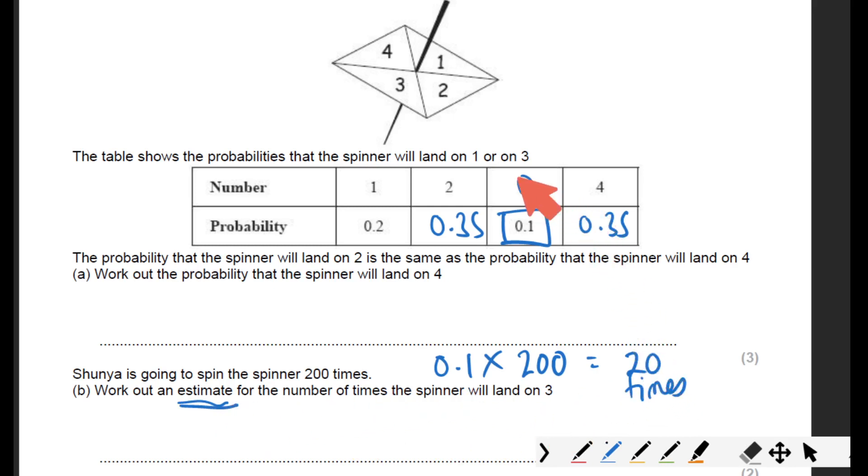You're estimating or expecting it to land on three 20 times if you spin it 200 times. In reality that might not happen. You could be extremely unlucky and it might not even land on three not even once out of 200 times, or it could land on three every single time, very unlikely. But the theory says that it should land on three 20 times if you spin it 200 times based on this probability. It's just an estimate.